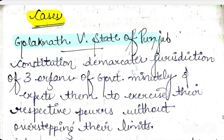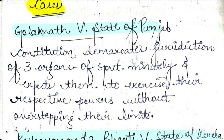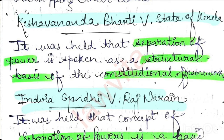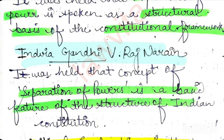Now some important cases. First is Golaknath versus State of Punjab, where the court said that the Constitution of India has three organs of government with defined jurisdictions, and it is expected that they perform without overstepping their limits or interfering with other organs' powers. Next is Kesavananda Bharati versus State of Kerala, where the Supreme Court held that the doctrine of separation of powers is a structural basis of our constitutional framework and therefore it is a part of the basic structure of our constitution. The same thing was reiterated in Indira Gandhi versus Raj Narayan, where the court held that this concept of separation of power is a basic feature of the structure of the Indian constitution.